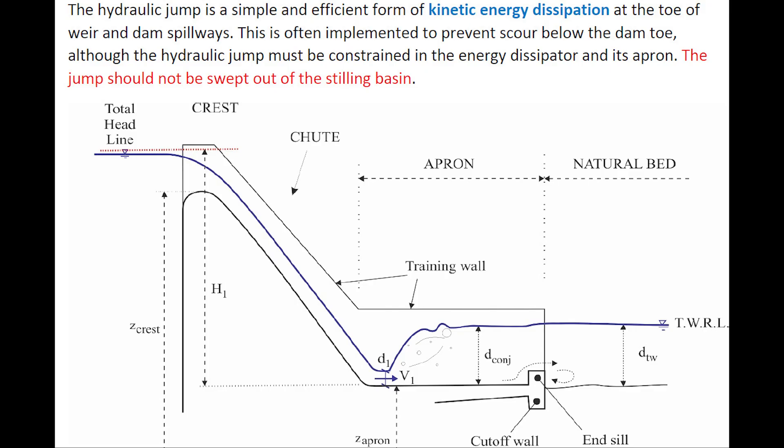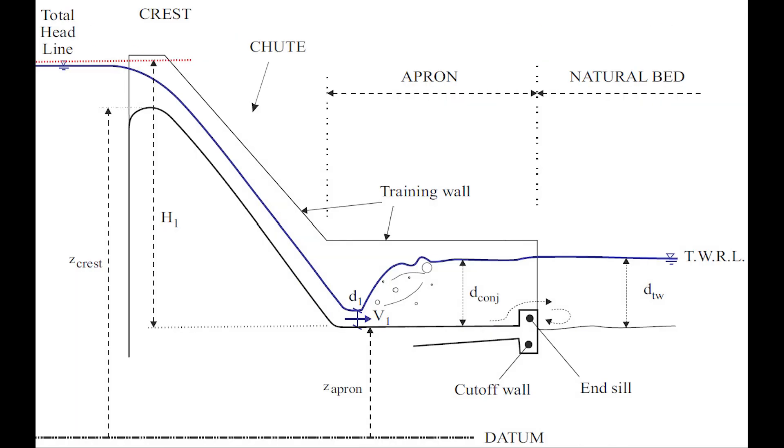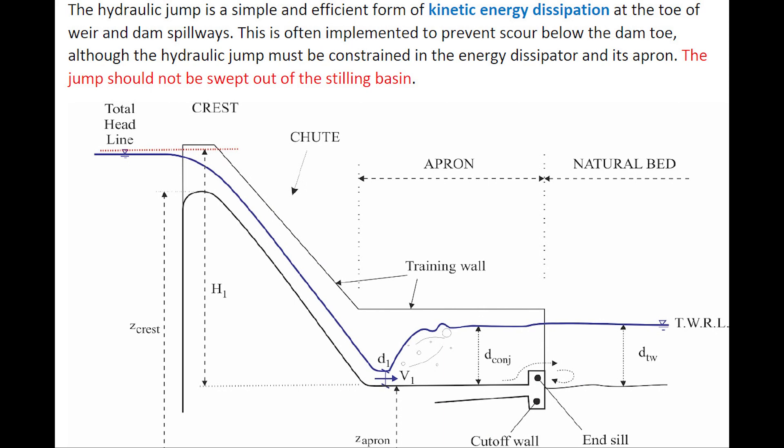The hydraulic jump is a simple and efficient form of kinetic energy dissipation at the toe of weirs and dam spillways, as illustrated in this sketch. It is often implemented to prevent scour downstream or below the dam toe. The hydraulic jump must be constrained within the energy dissipator structure, and the jump should not be swept out of the stilling basin.